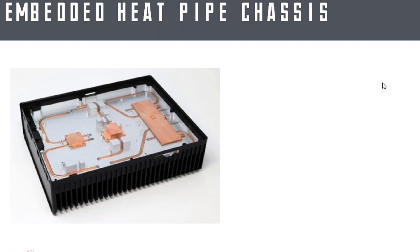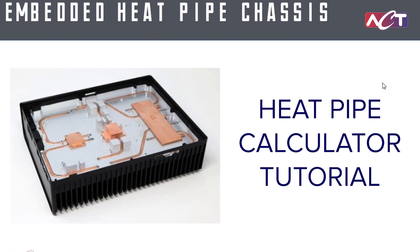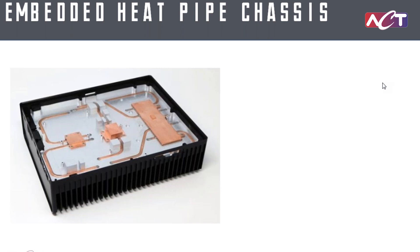Welcome. Today we're going to go through a real-world example of using the heat pipe calculator. We're going to do a somewhat complex example to show some of the preliminary considerations before actually running the heat pipe calculator. We pulled this image from our website — it's an embedded heat pipe chassis with fins off the backside and multiple components. We're going to run the heat pipe calculator for one of these heat pipes in the system.